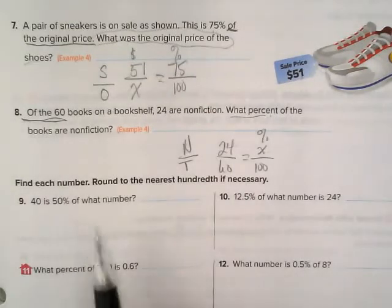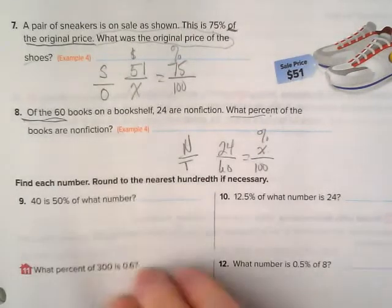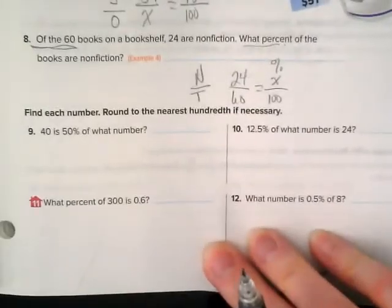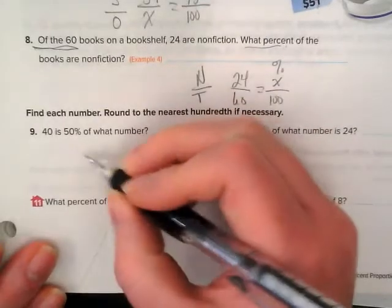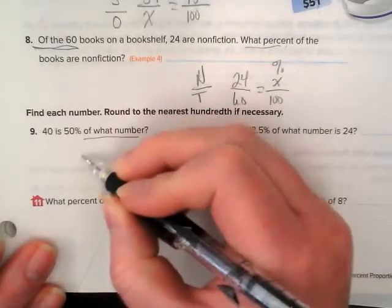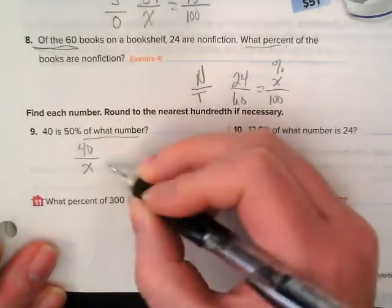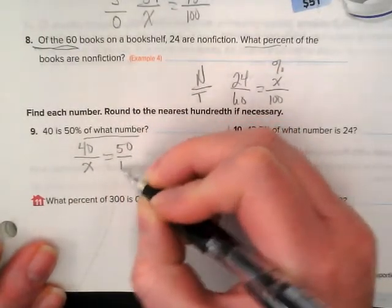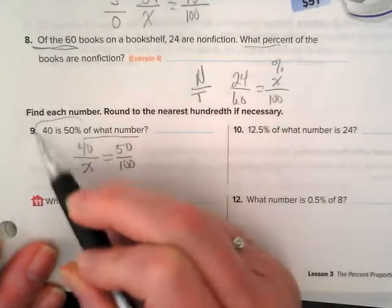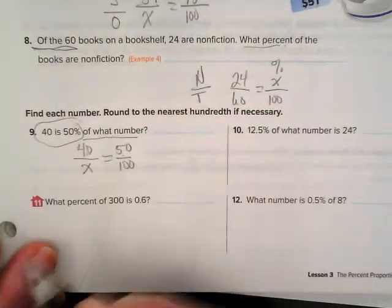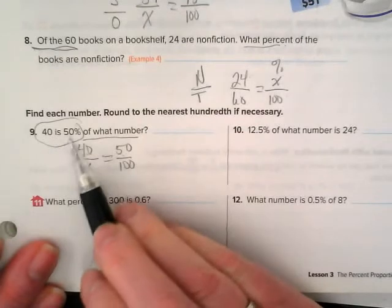I had a few people ask questions about number 7, so I'm going to zoom in on that a little bit there. A pair of sneakers is on sale as shown. So this is the sale price. This is 75% of the original price. So in this case, I'm comparing sale price to original price.